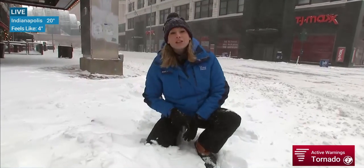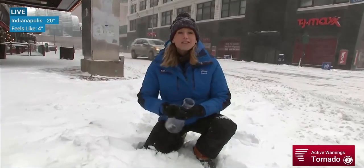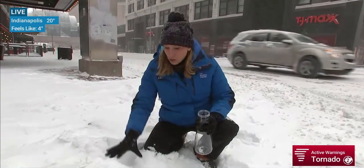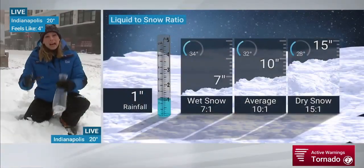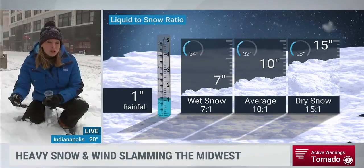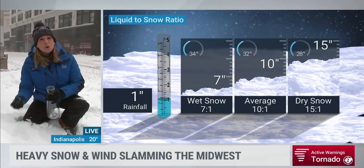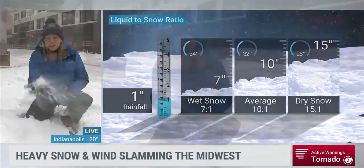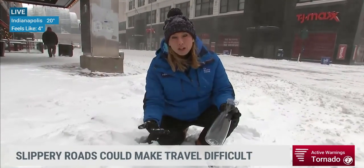So that brings us to snow-to-liquid equivalent. There's a ratio — the average is 10-to-1, meaning if you get 10 inches of snow, it'll melt down to one inch. But if it's heavier and wetter, you only need about eight inches of snow to melt down to one inch of liquid equivalent because there's more water in it. But because this snow is so fluffy and there's less water in it, you might need 12 or 13 inches to melt down to one inch.